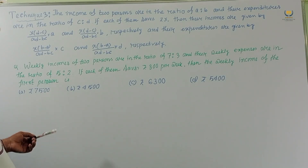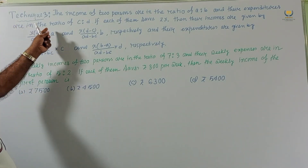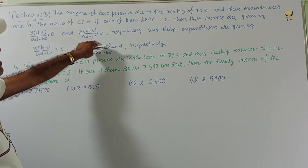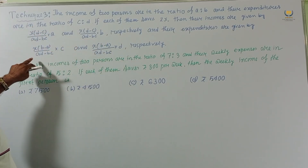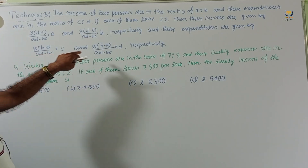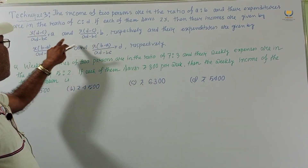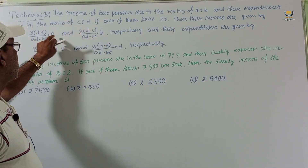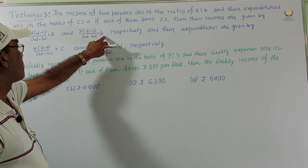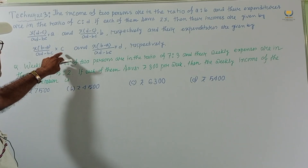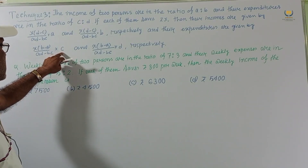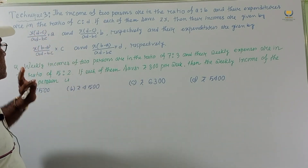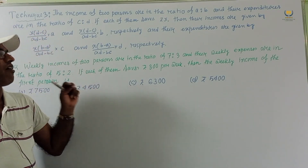Just remember: the income of the first person uses 'a' and the second person uses 'b'. The expenditure of the first person uses 'c' and the second uses 'd'. The key differences are: b−a, d−c, and ad−bc. This is our main technique to solve problems within a short time.